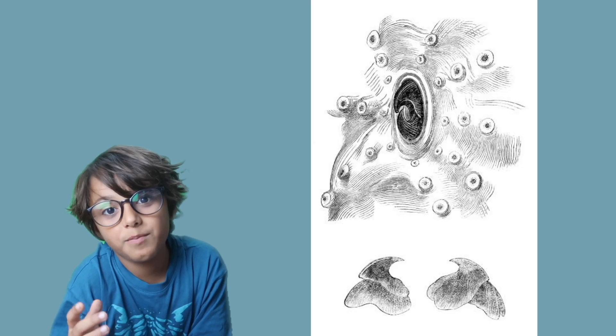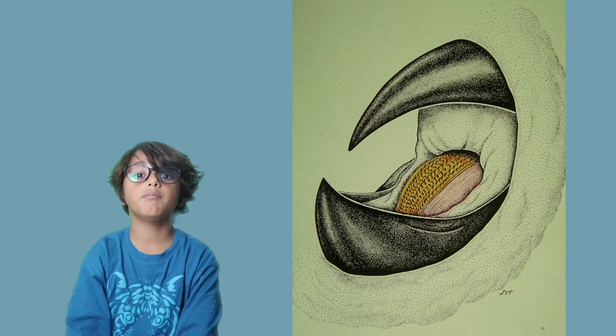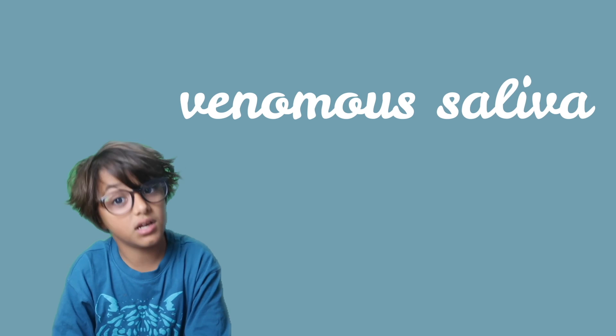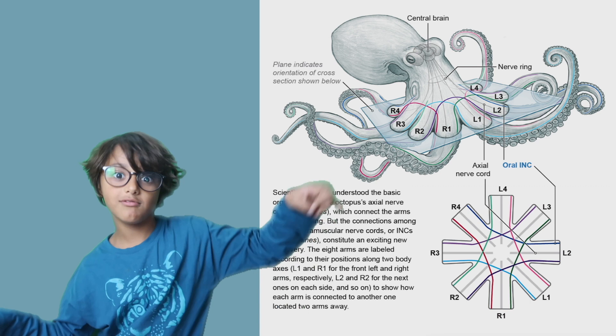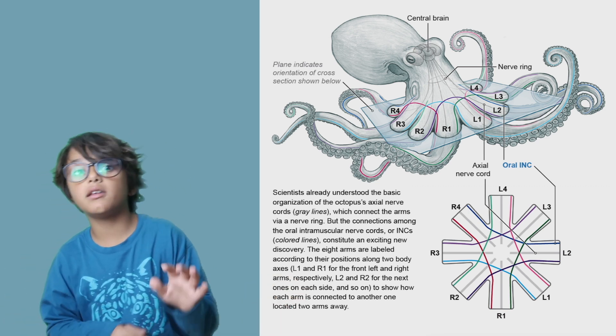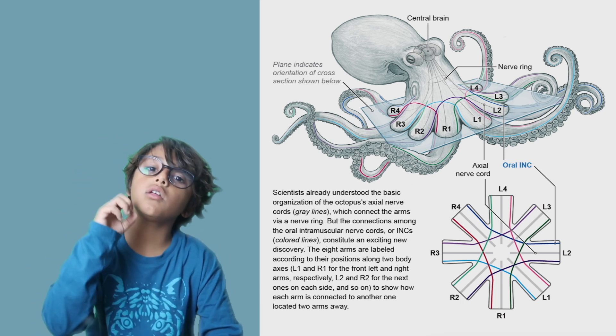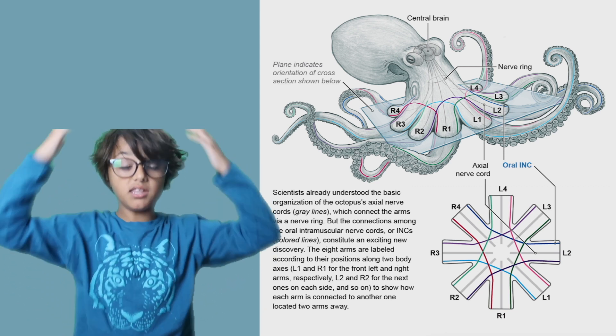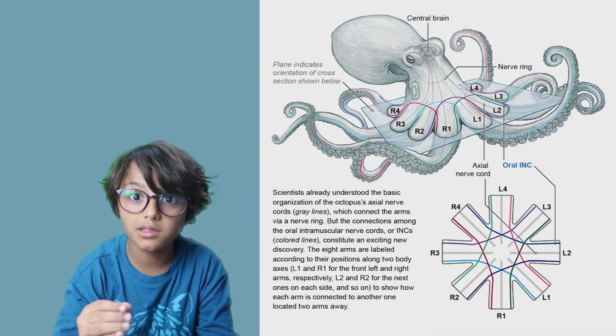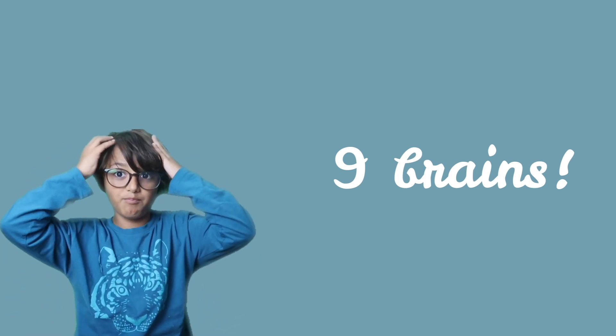Octopuses have beak like jaws, very like a bird's beak. And they also have venomous saliva. It's a common fact that octopuses have eight tentacles. But did you know that each tentacle has like one little brain? Did you know that octopuses have nine brains? Eight in all of their eight tentacles. Of course. The brains in their eight tentacles are small, but the one in their face and the body is very large. So in total they have nine brains. Brain blown.